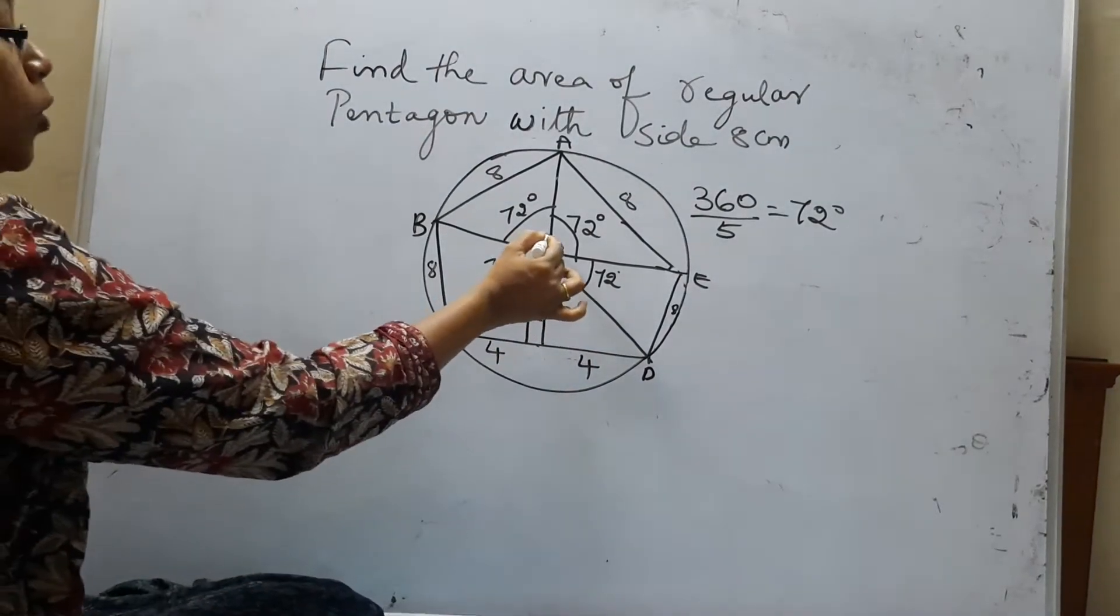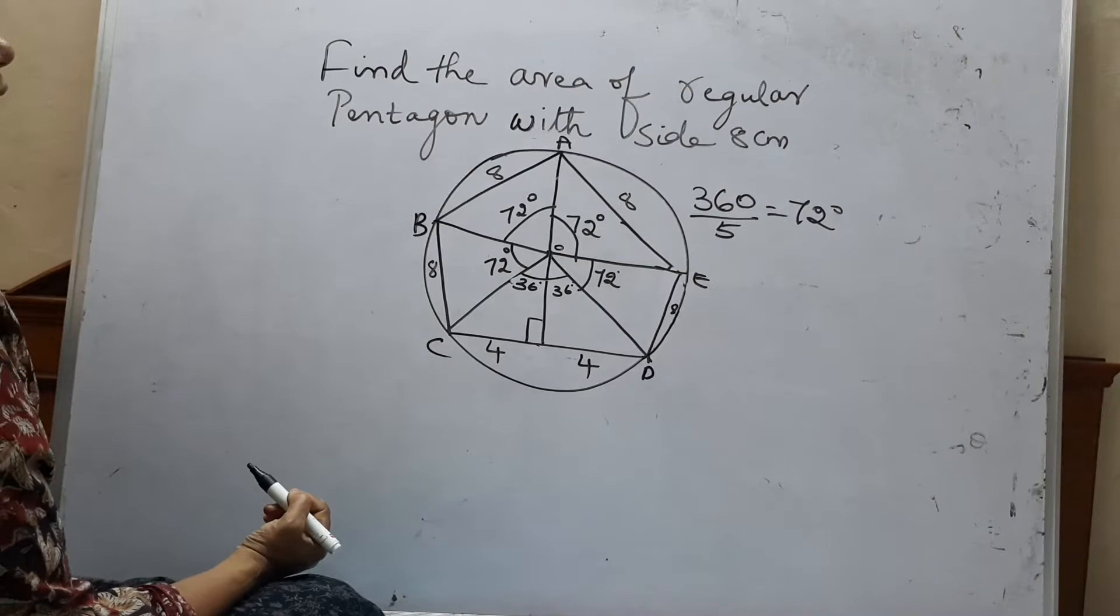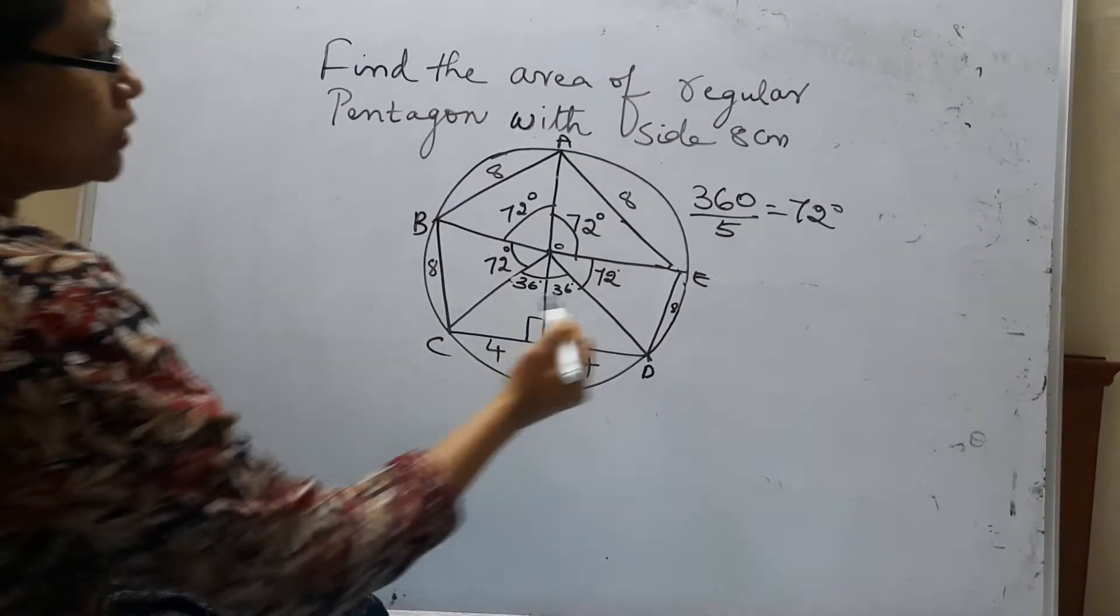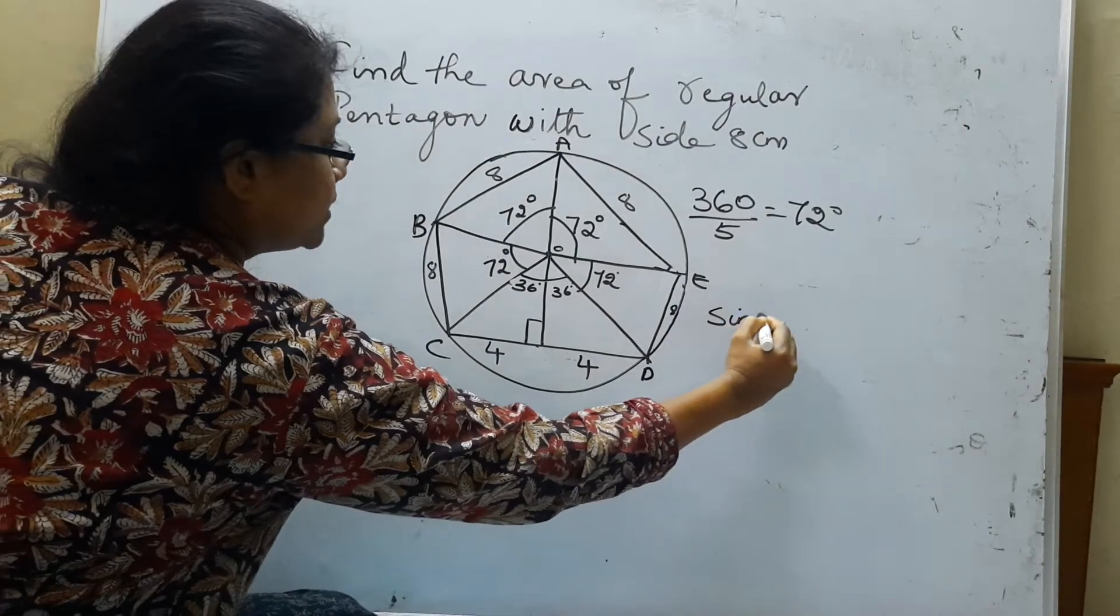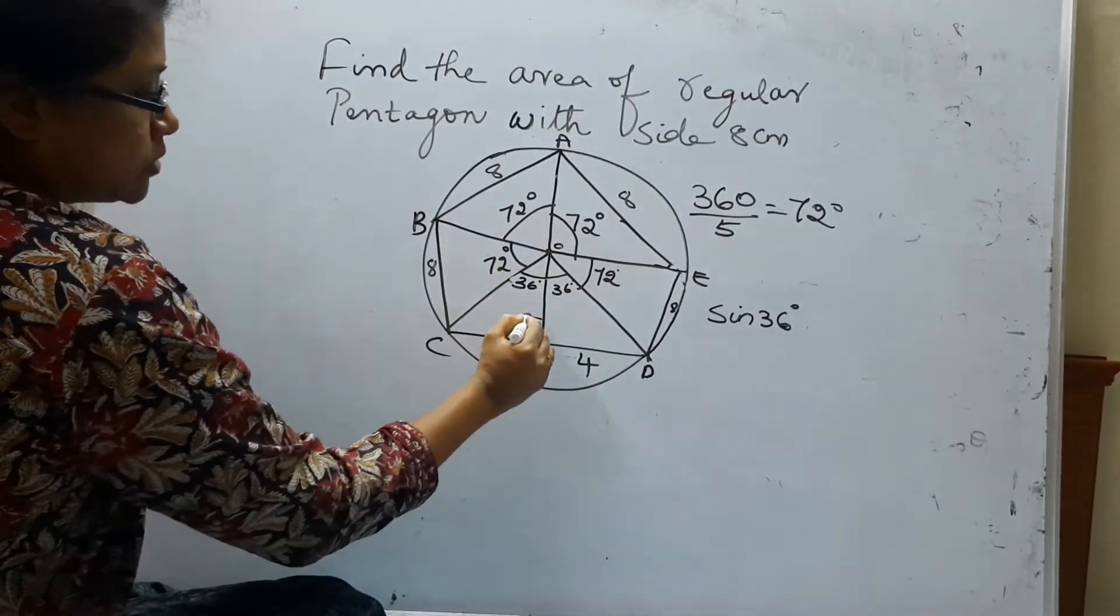Now I am going to find this OC. OC is also nothing but the radius. So how can you find OC? I would use the concept of trigonometry. Sin 36 equals, I want this side. I want my hypotenuse because this is 90 degrees.